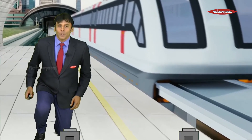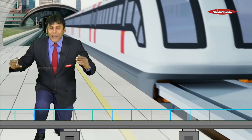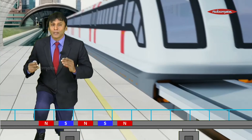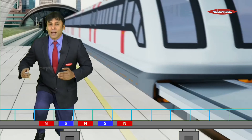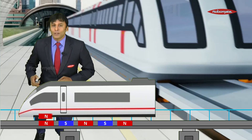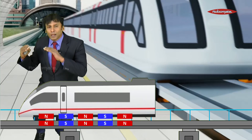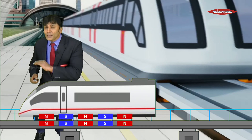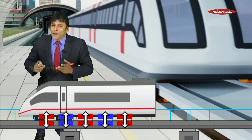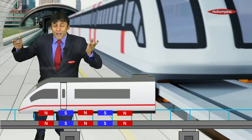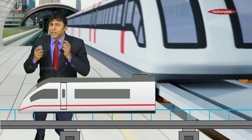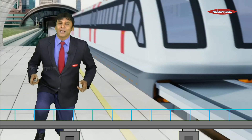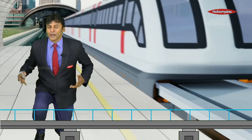Let's understand how. These are the guide rails of the maglev train, fitted with electromagnets — when current flows, they behave like magnets. The guide rails are fitted with magnets, and the train is also fitted with magnets. The arrangement is done so that similar poles face each other. When similar poles face each other, there is repulsion, and because of this repulsion the train levitates. As the train levitates, friction is minimized, and the train can travel at very high speed. This is the maglev train.